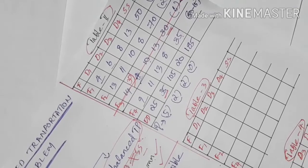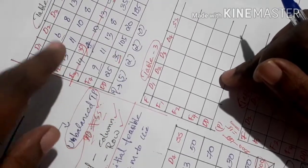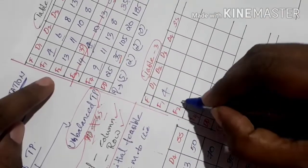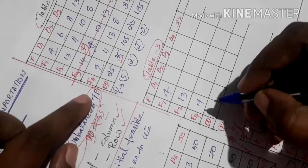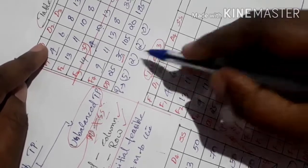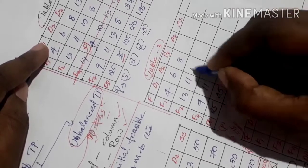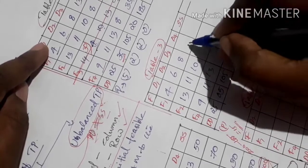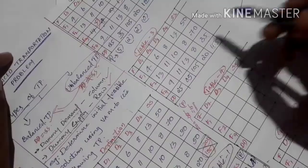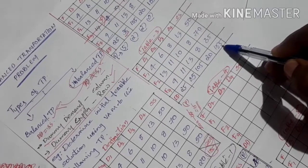Table 3 is constructed with the remaining rows and columns. The rows are F1, F2, and F4. Destinations are D1, D2, D3, D4. The costs are: F1-D1: 4, F1: 13; F4: 9; then 6, 11, 11; 8, 10, 13; 13, 8, 8. Supply values are 50, 70, 35 — total 155. Demand values are 25, 5, 105, 20. We now calculate penalties for each row and column.